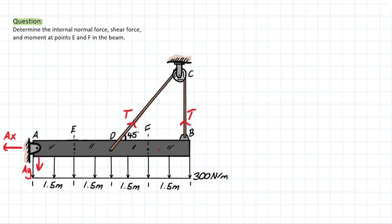If we consider the free body diagram just for this member and exclude the pulley, we know that from that reference frame we're going to have two tensile forces supporting this member. If you need a recall on that you can click the link at the top here. So now we have every reaction identified, and we can also identify that we're going to have a force resultant created by this distributed load.